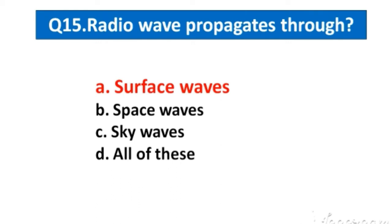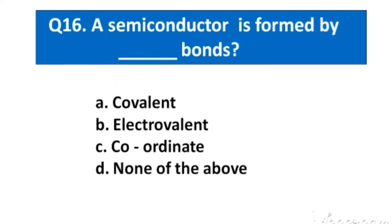Question number 16. A semiconductor is formed by bonds. Option A. Covalent, B. Electrovalent, C. Coordinate, D. None of the above. The right answer option A. Covalent.